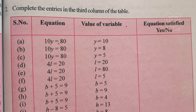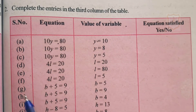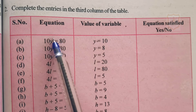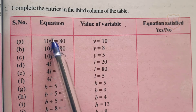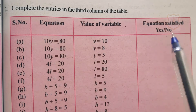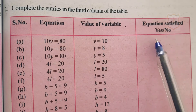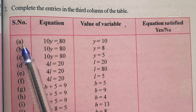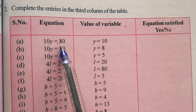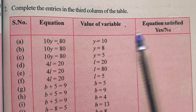Question number 2: Complete the entries in the third column of the table. In the first column, numbers are given; in the second column, equations are given; in the third column, the value of the variable is given; and in the fourth column, we have to write whether the equation is satisfied — yes or no. Part A of question number 2: 10y equals 80, where the value of the variable y is 10.